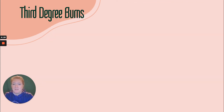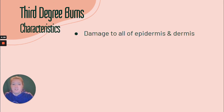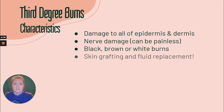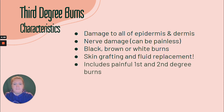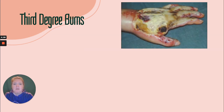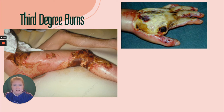Third degree burns involve damage to all of the epidermis and dermis — the whole thing. There's nerve damage, so it can be painless because of the damage to the nerves. It's often black, brown, or white in appearance. It will require skin grafting and fluid replacement — this is where we definitely need to be calculating based on the rule of nines. It often includes painful first and second degree burns around the area, and it can be potentially life-threatening. The black, brown, or white color indicates the severity.